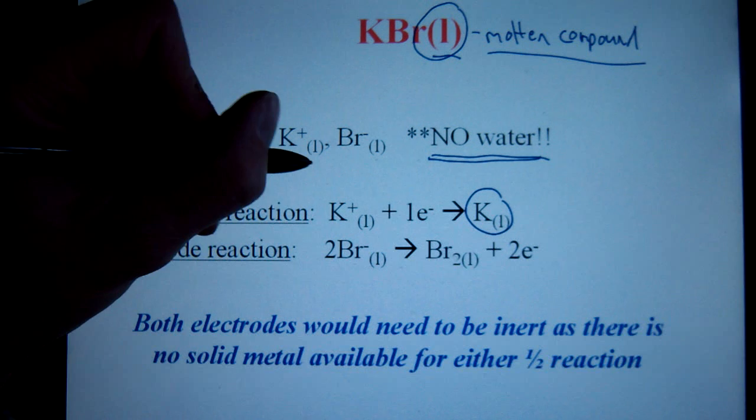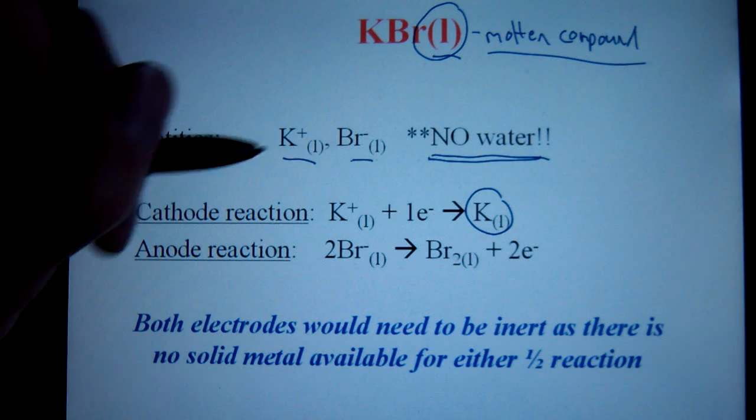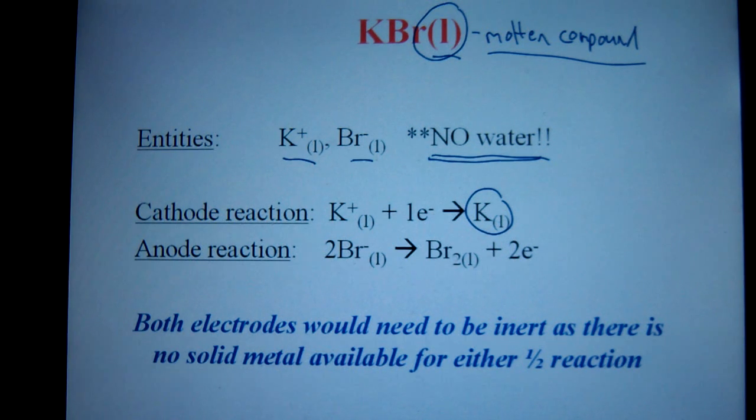And my only two entities, then, are potassium and bromide, and therefore my only two available OAs and RAs. That's it. You can still treat, even though they're liquid state, you can still use your redox table in the same way.